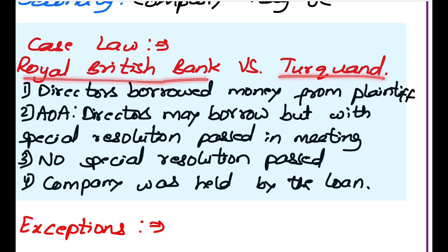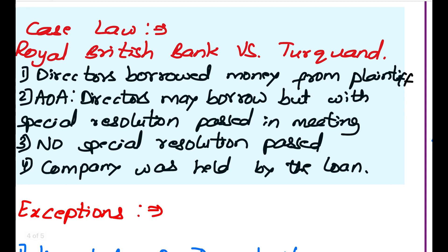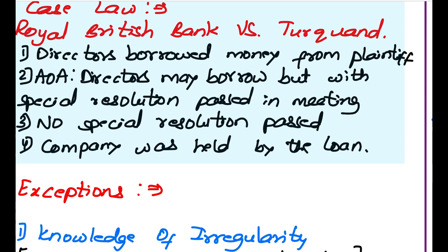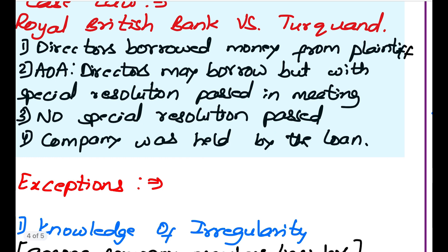Case Law: Royal British Bank vs. Turquan. The directors borrowed money from the plaintiff. The Article of Association read that directors may borrow, but only with a special resolution passed in a meeting. No special resolution was passed, yet they took a loan from the plaintiff. The company's board filed a suit that this loan was not binding on the company. However, it was held that the company was bound by the loan due to the Doctrine of Indoor Management, as the plaintiff had presumed that the directors had passed the special resolution and performed the preliminaries.